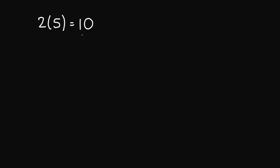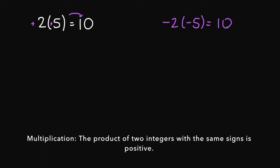Now let's say if we had 2 times 5 — 2 times 5 is 10. So the product of two integers with the same sign is positive. Notice you have a positive 2 and a positive 5, and that's going to give us a positive answer. Now let's say if we had negative 2 times negative 5 — your answer here is still going to be positive. I have a negative sign for my 2 and also a negative sign for the 5. You're going to get a positive 10 as well.